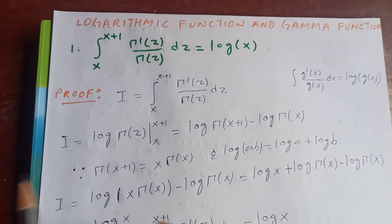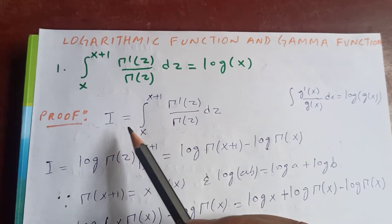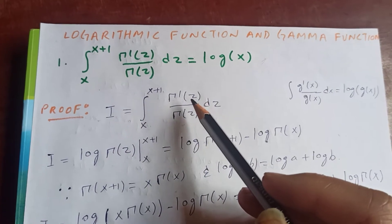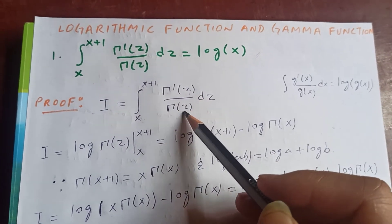Now proof. Let me say the integral to be I from x to x plus 1, gamma prime of z upon gamma z dz.